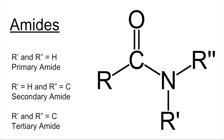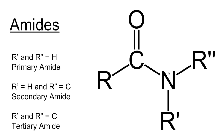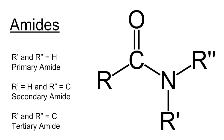On the right we've got the general structure of an amide and the key part of the molecule is this C double bond O and single bond to an N — that's the amide group. If both R groups are hydrogens, that's a primary amide. If one R is a hydrogen and the other is a carbon group, that's a secondary amide. If both R groups are carbon groups, that's a tertiary amide.